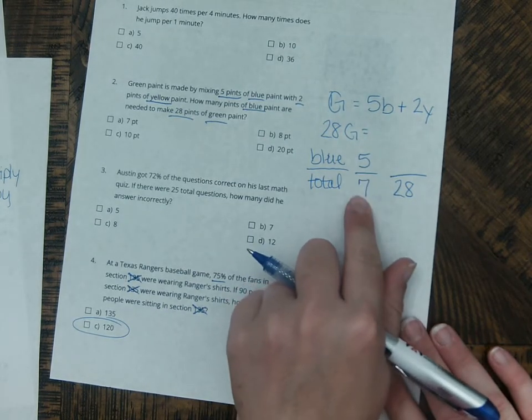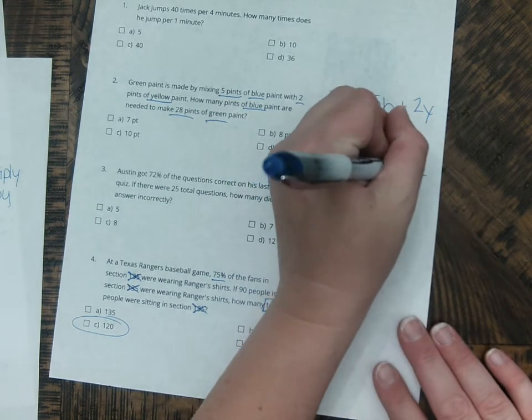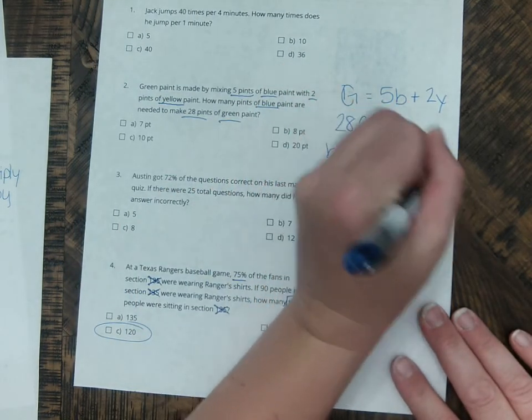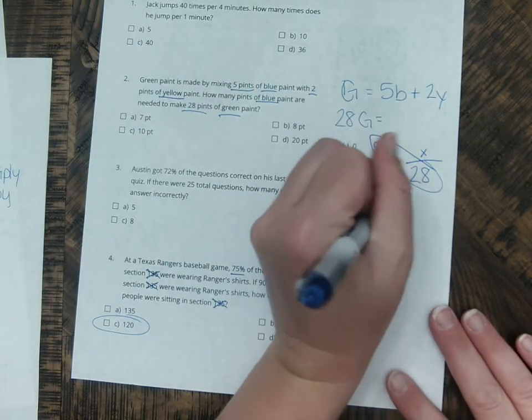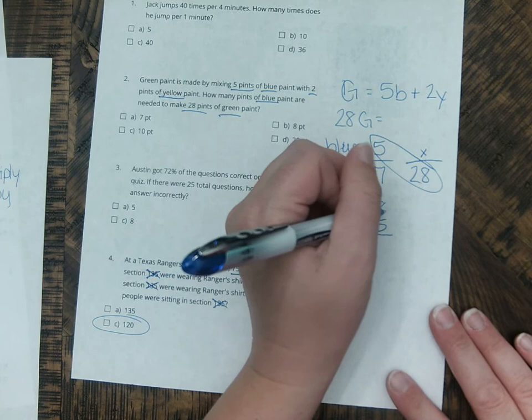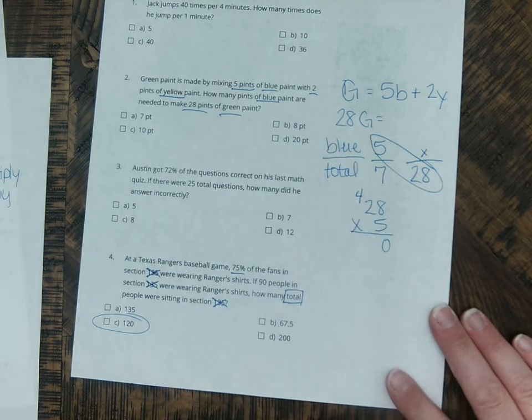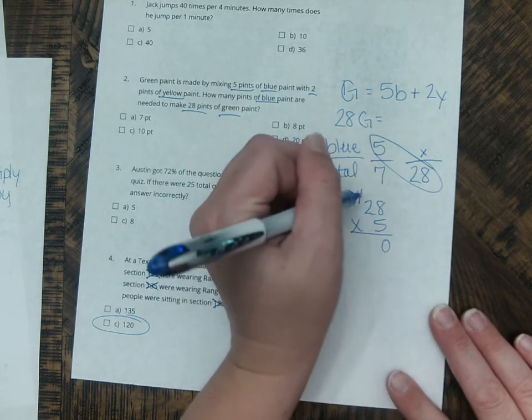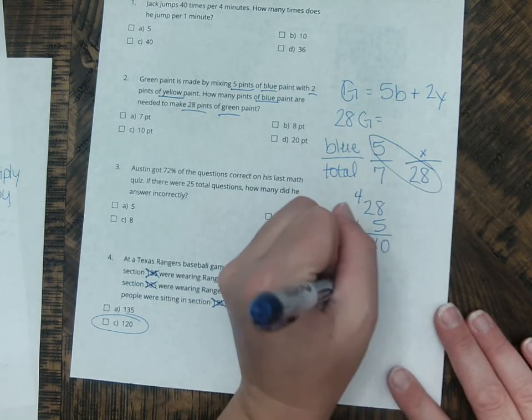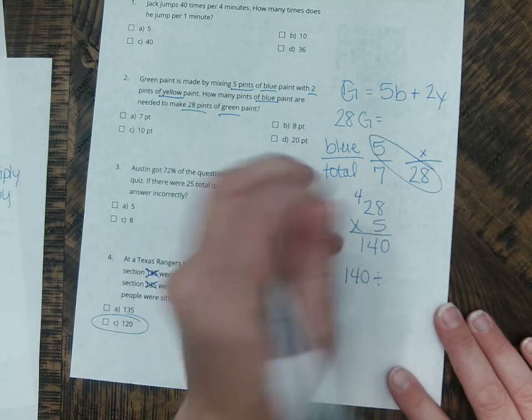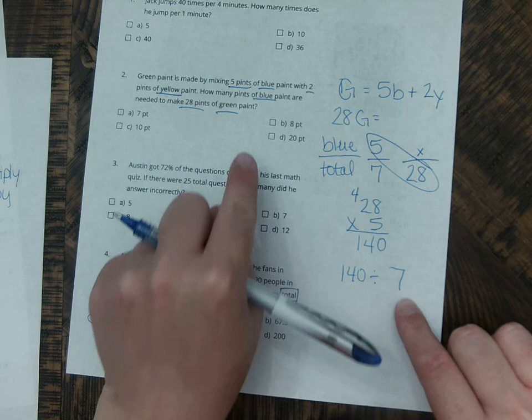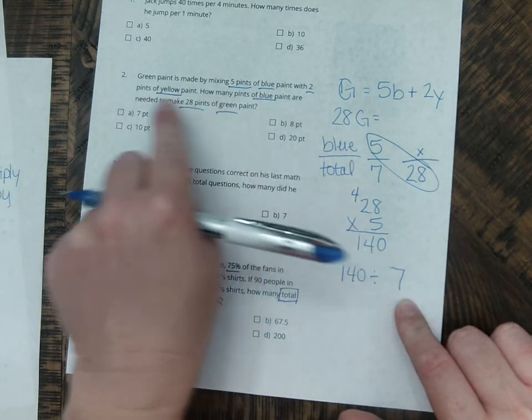So now I have 5 over 7 is x over 28. And I can solve this the way I did the other proportion, which is 5 times 28. So 28 times 5. So we know 8 times 5 is 0. We carry our 4 because it's 40. 5 times 2 is 10 plus 4 is 14. So now I get 140 divided by what's left. What number is left? 7. So figure out what 140 divided by 7 is, and you will figure out your answer.